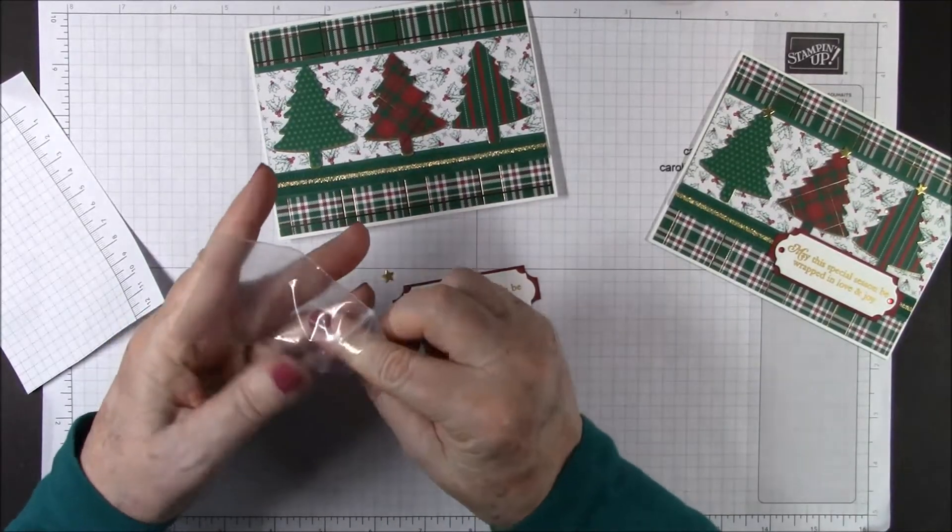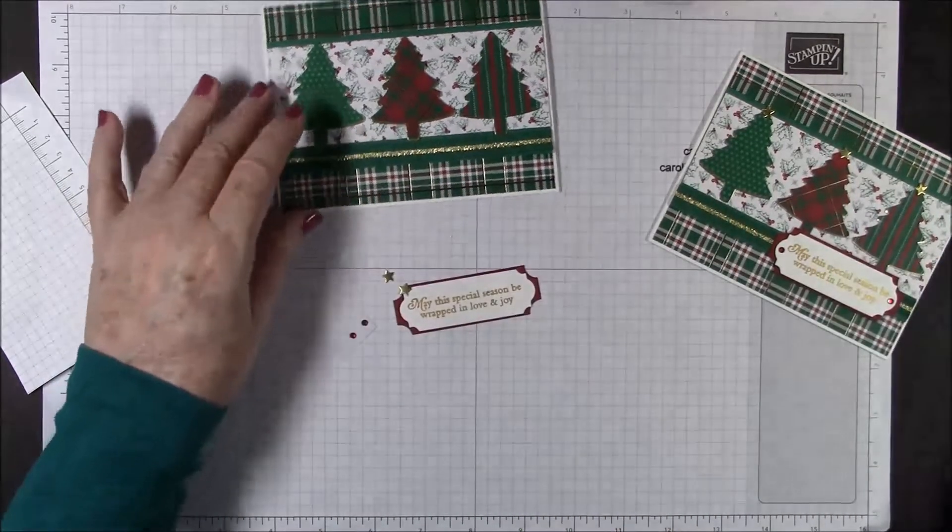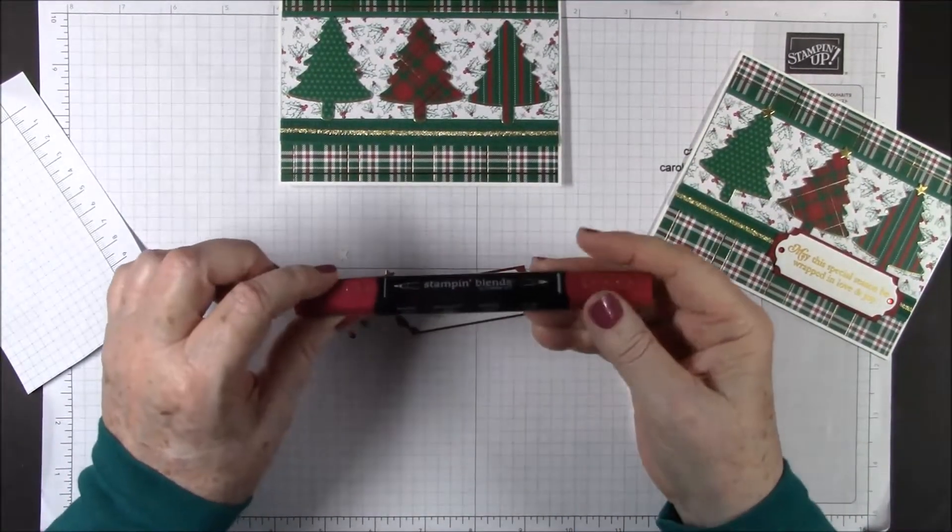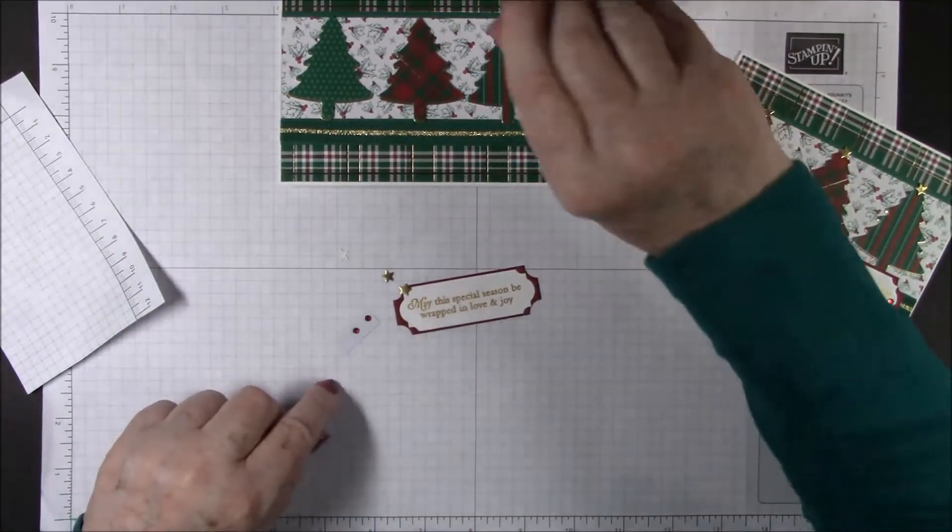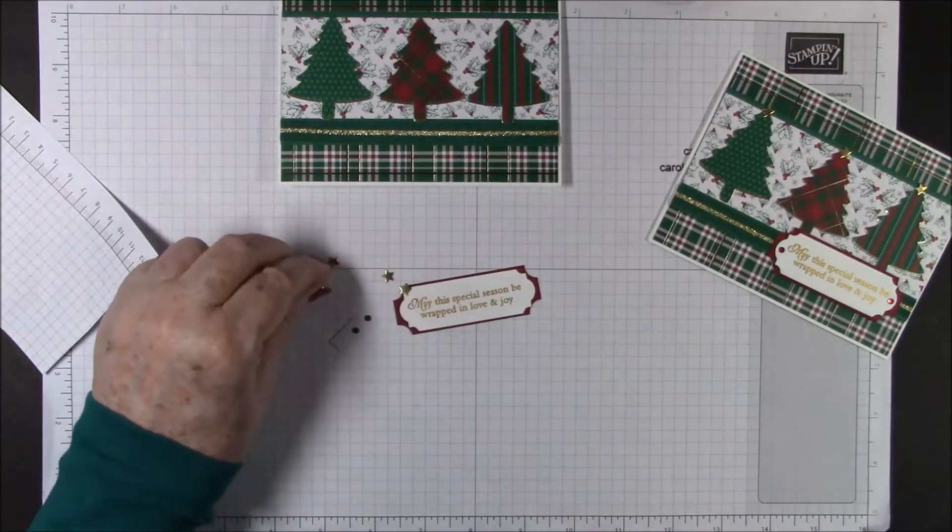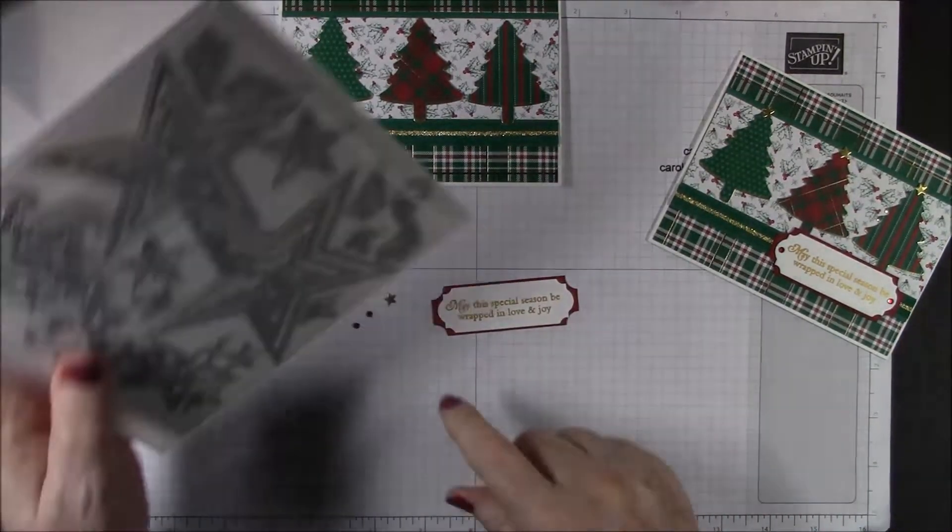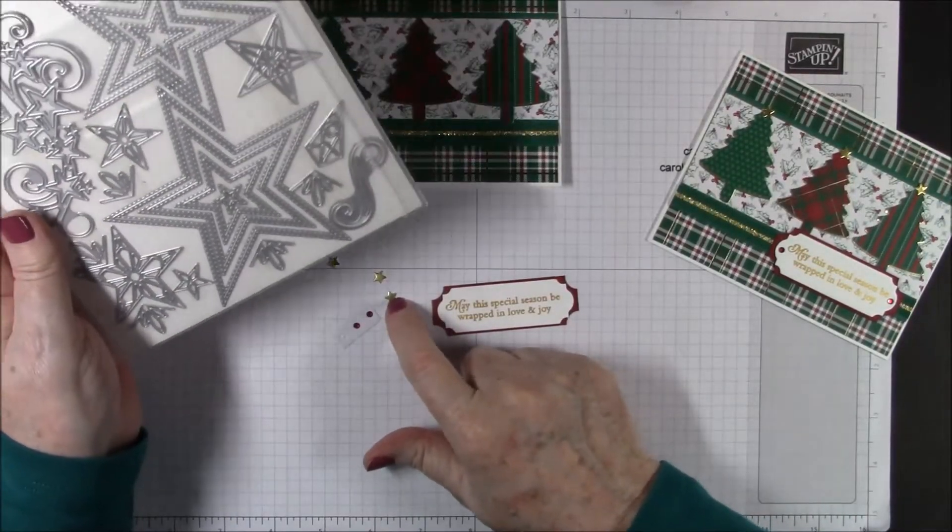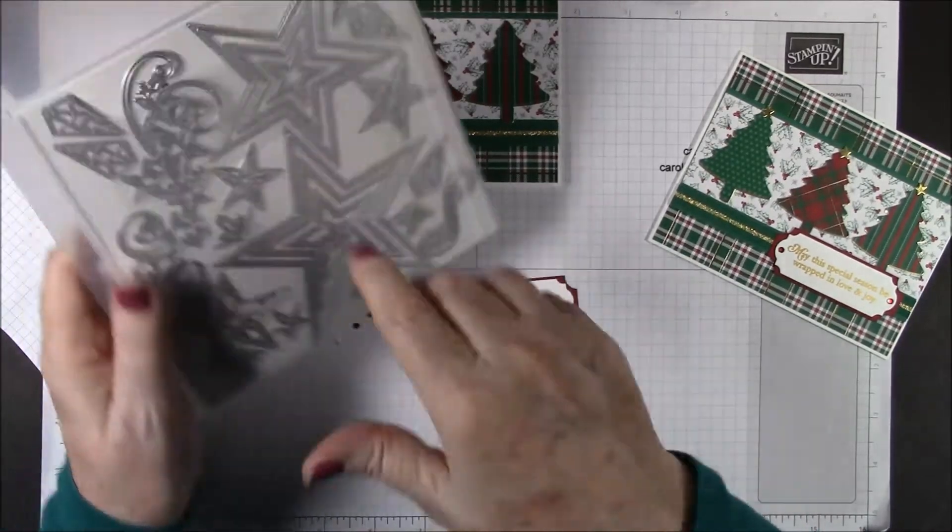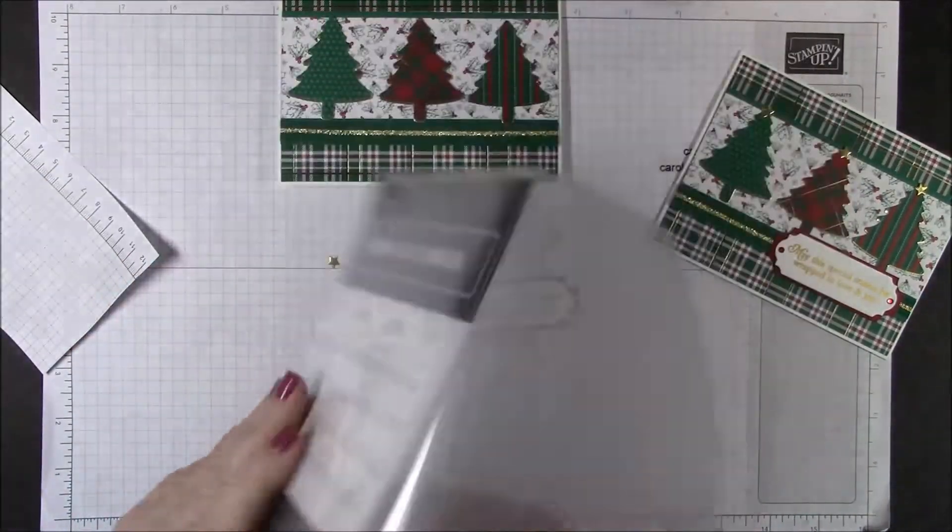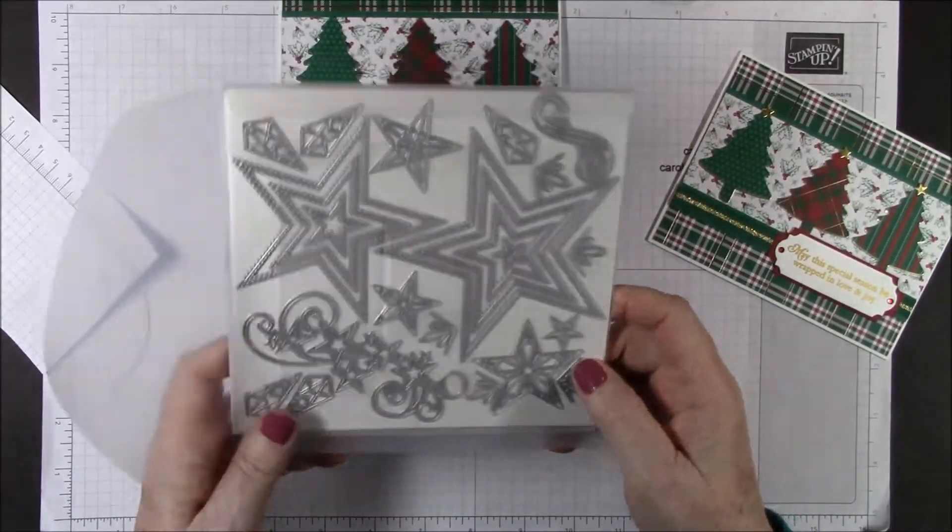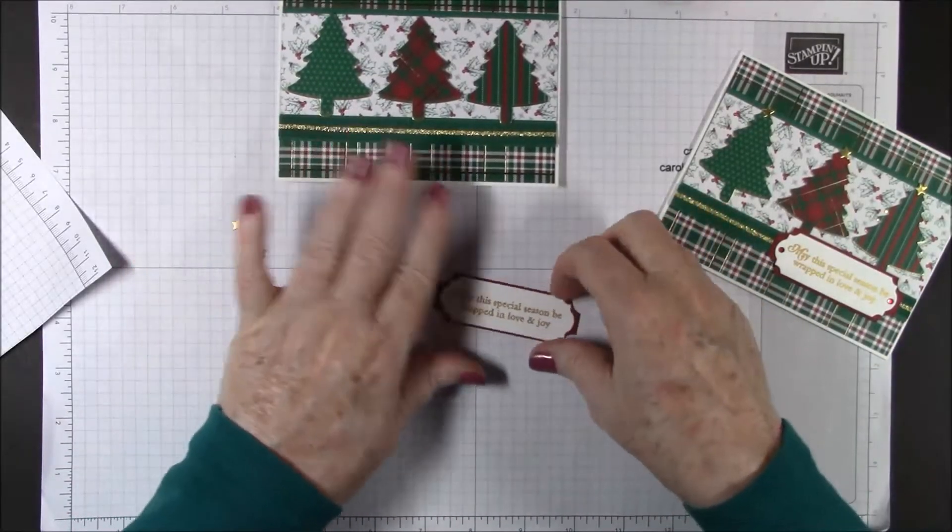I'm going to let that dry just a minute. Bring in your gold stars and this, I have some of the basic jewels rhinestones. I've colored them with the bullet point of my dark cherry cobbler stampin blends to make them match. These little stars have adhesive backing on them. I put the adhesive sheeting on the back and then die cut it with the very smallest stitched star die.